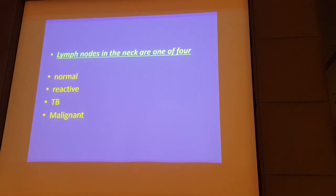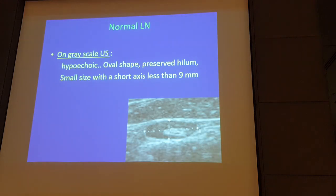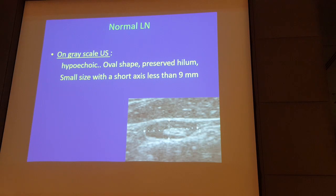Can ultrasound differentiate between different lymph nodes in the neck? Yes, it can. Lymph nodes in the neck are one of four: either normal lymph nodes, reactive lymph nodes, tuberculous lymph nodes, or malignant lymph nodes — either lymphoma or metastatic lymph nodes. Starting with normal lymph nodes: on greyscale ultrasound, the normal lymph node is hypoechoic, oval in shape, with a preserved echogenic hilum, and small size — meaning the short axis is less than nine millimeters.